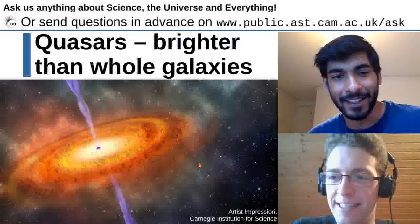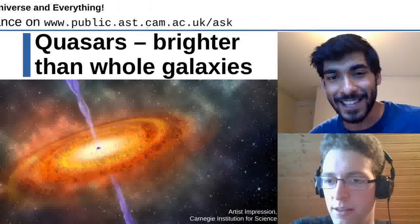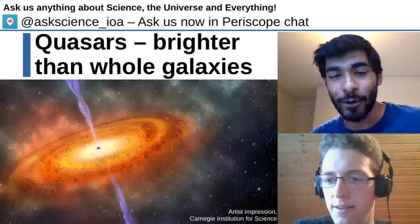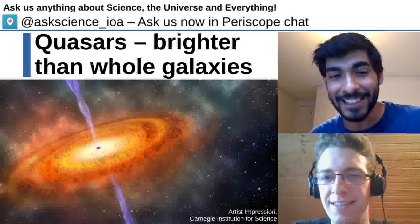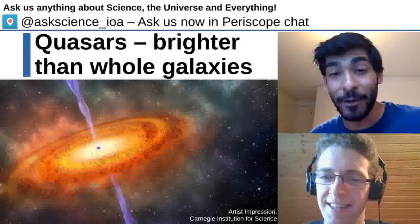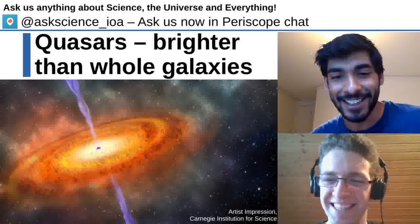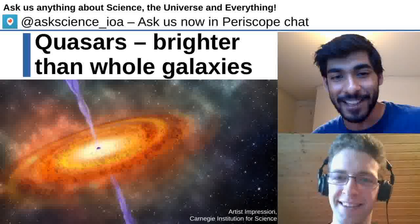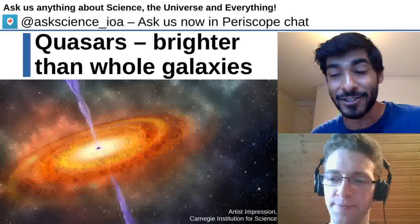The word quasar itself comes from 'quasi-stellar.' When astronomers first discovered quasars, they thought they were stars — that's how bright they were. These objects millions of light years away, in other galaxies, appeared so bright that we thought they were stars in our own galaxy. Only as we got more and more data did we realize they're actually outside our galaxy — just super bright objects.